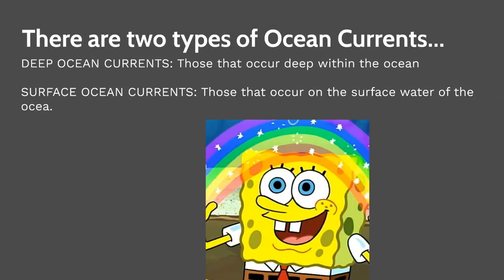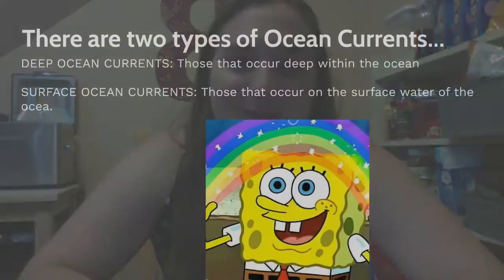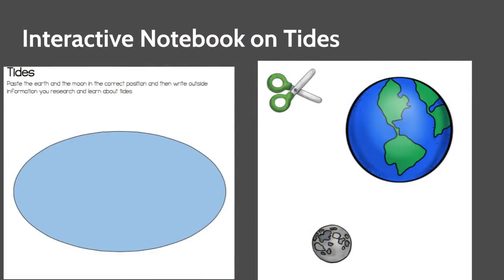There are two types of ocean currents. Deep ocean currents occur deep within the ocean, and surface ocean currents occur on the surface of the water. Just like groundwater is below the ground and surface water is above it, deep ocean currents are deep in the ocean and surface currents are on the surface. Mind blown, right?